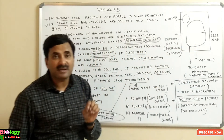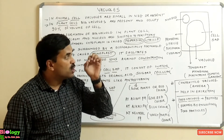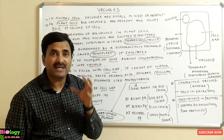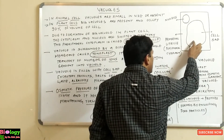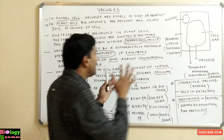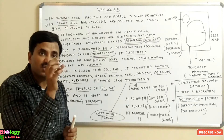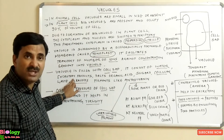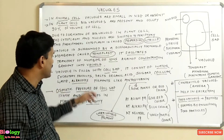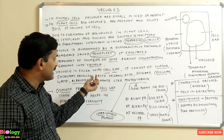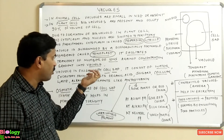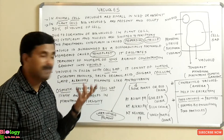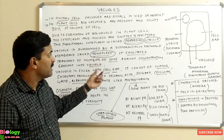The vacuole is not an air-filled cavity — it is filled with cell sap, also called vacuole sap. The chief ingredients of the cell sap are water in large quantity, excretory products, cellular waste, sugars, salts, organic acids, alkaloids, and pigments.